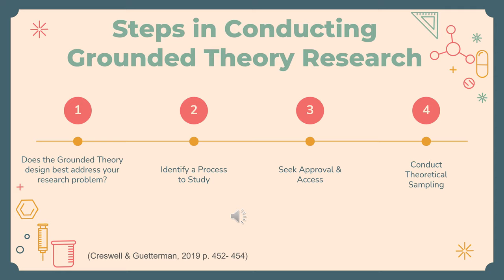Step 2: Identify a process to study. Because the intent of grounded theory research is to explain a process, you need to ensure you are identifying a tentative process to examine early on in your grounded theory study and research. This process should naturally follow from the research problem and questions that you are looking to answer. Step 3: Seek approval and access. As with all research studies, you need to obtain approval from the Institutional Review Board while also ensuring you are gaining access to individuals who can provide insight into the process that you plan to study.